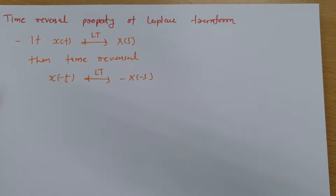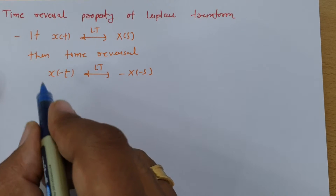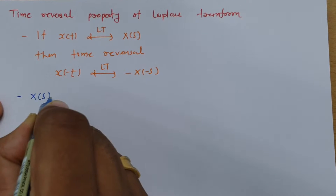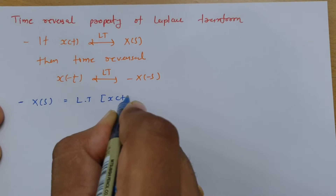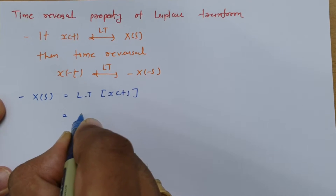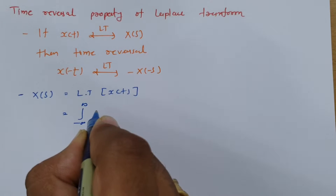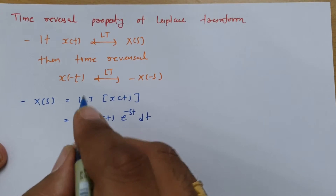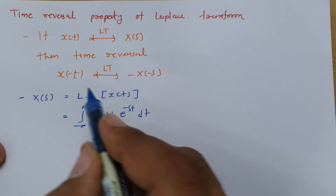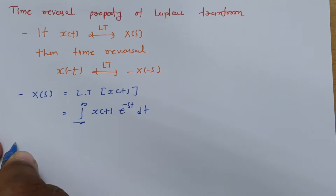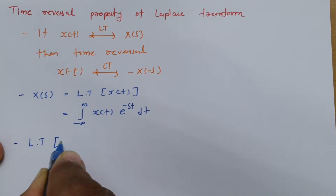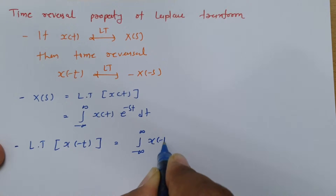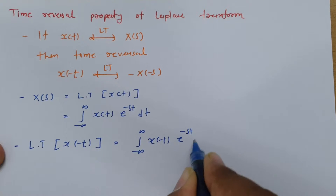So let us derive this property step by step. The Laplace transform of x(-t) has to be minus of X(-s). We already know the Laplace transform of x(t) is X(s), which equals the integration from minus infinite to infinite of x(t) e to the power minus s·t dt. Now let us consider the LHS: the Laplace transform of x(-t) equals the integration from minus infinite to infinite of x(-t) e to the power minus s·t dt.